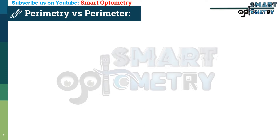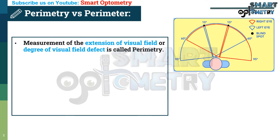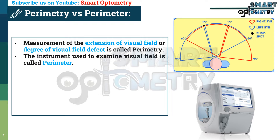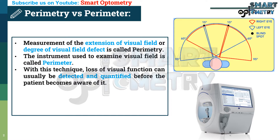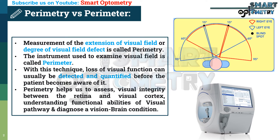Perimetry vs Perimeter. Measurement of extension of visual field or degree of visual field defects is called Perimetry. The instrument used to examine visual field is called Perimeter. With this technique, loss of visual function can usually be detected and quantified before the patient becomes aware of it. Perimetry helps us to assess visual integrity between the retina and visual cortex, understand functional abilities of the visual pathway, and diagnose a vision-brain condition.